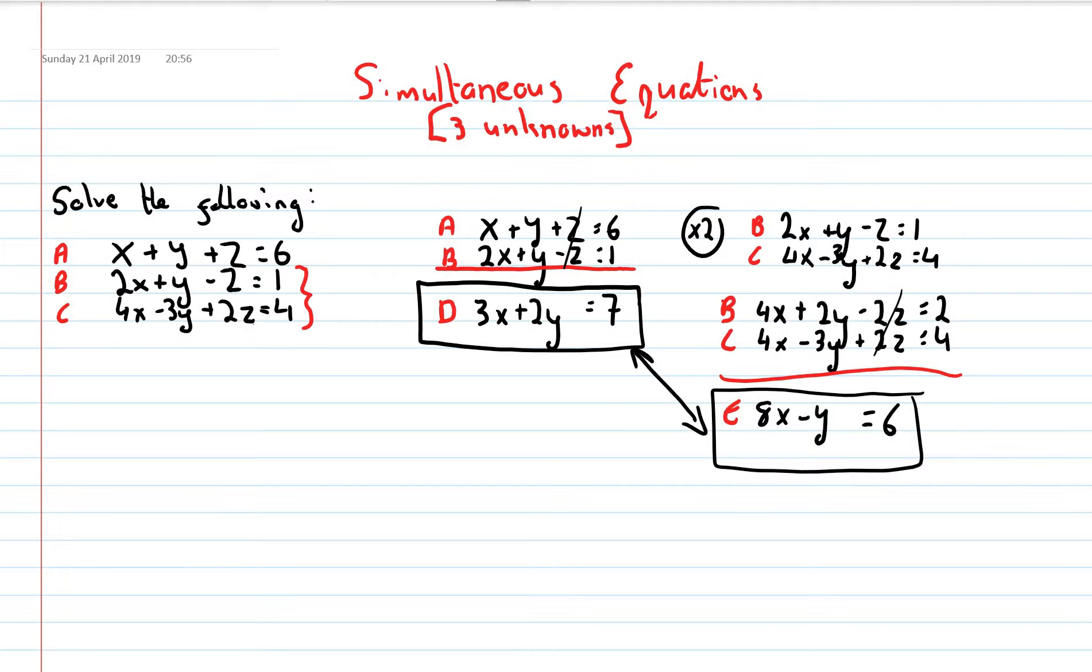Here we go. So, we have equation D and equation E. We have 3x plus 2y equals 7, and 8x minus y equals 6. We want our positive and negative pair. I have a 2y on the top, minus y on the bottom. So, I'll multiply this by 2.